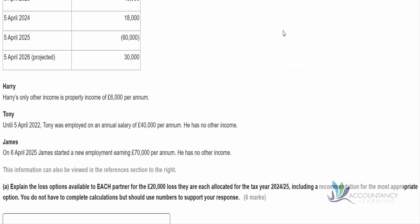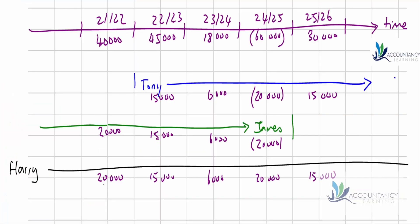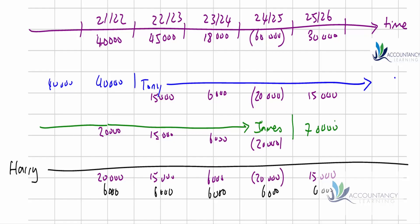Harry has property income of £6,000 per annum. Tony, until the 5th of April 2022, was employed on an annual salary of £40,000 per annum with no other income. James starts a new employment earning £70,000 and has no other income. These are added to our diagram to help assess the most beneficial loss relief options for each partner.